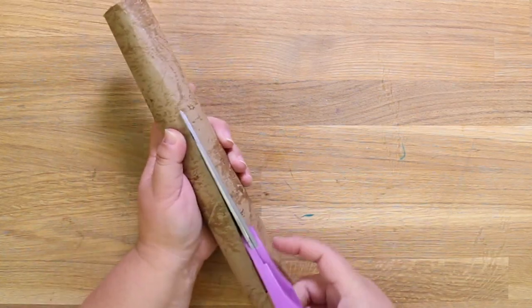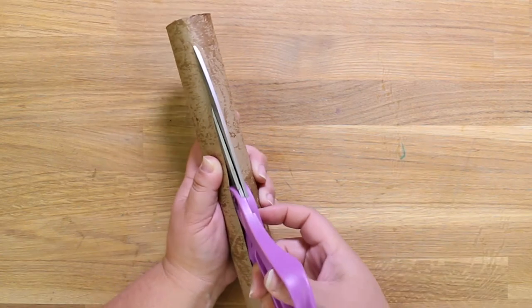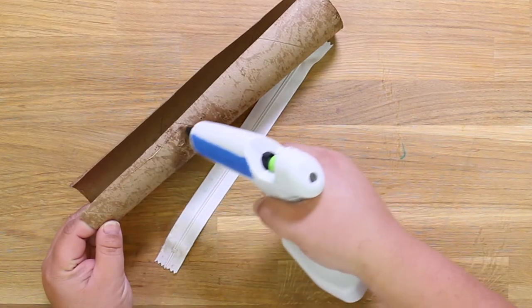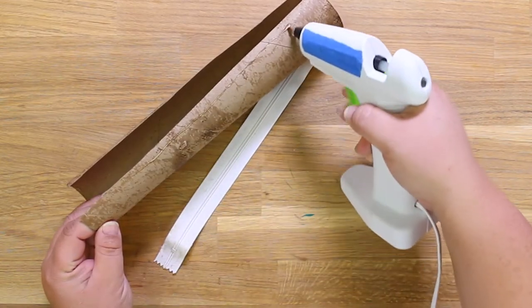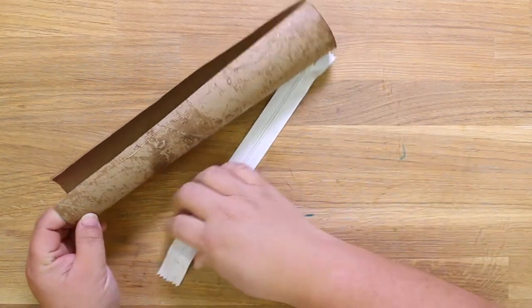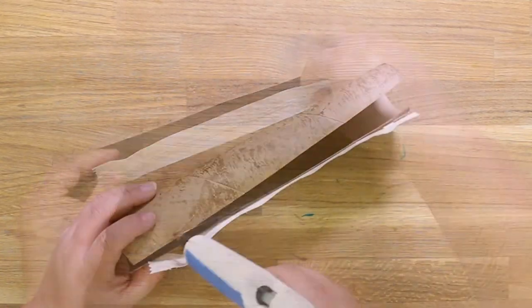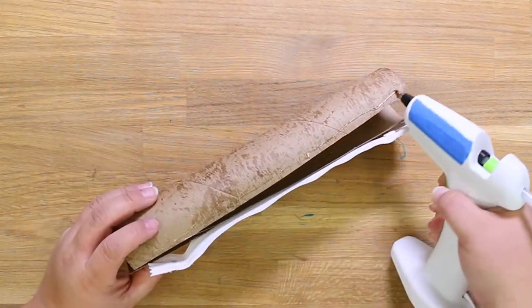Use the scissors to cut along the entire paper towel tube to cut it open. Now add a bead of hot glue to one side and then press the zipper onto the bead of hot glue. You're going to be pressing the twill tape side of the zipper onto the glue so that the zipper fits between the two cut ends of the tube.